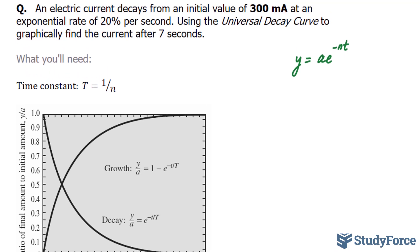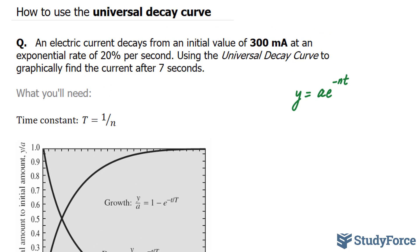And here's how you do it. Let's start off by writing out what they've given us. They've told us that the initial amount a is equal to 300 milliamps. They've also told us that the rate is 20%, in other words, 0.2 per second. Also, they've told us the time, which is 7 seconds.